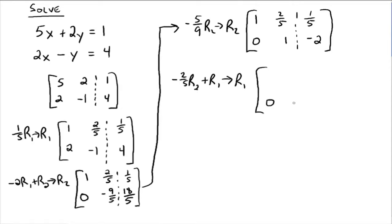So you'd have 0, 1, and negative 2, because row 2 is not changing. All right, so the negative 2 fifths times 0 plus 1 would be 1. Negative 2 fifths times 1 is negative 2 fifths, added to positive 2 fifths is 0. That's all we wanted to have happen.